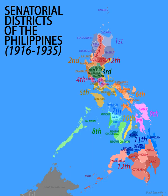Seventh District — Provinces: Capiz, Iloilo. Later additional provinces: Romblon, separated from Capiz in 1917.